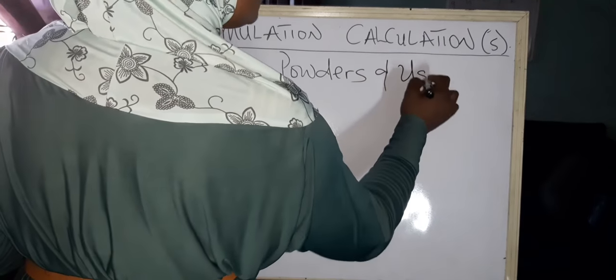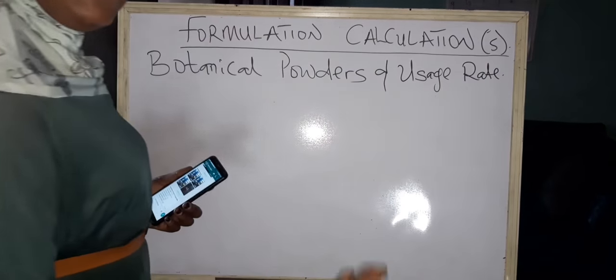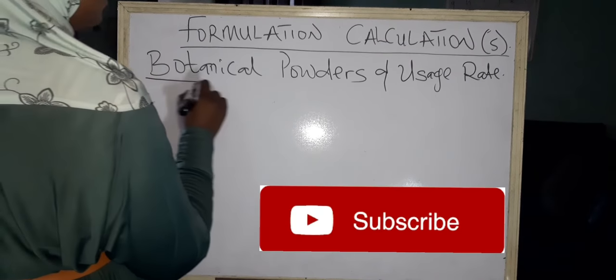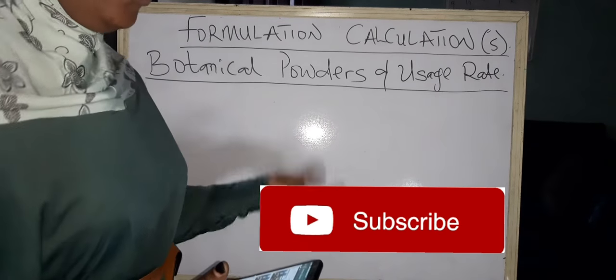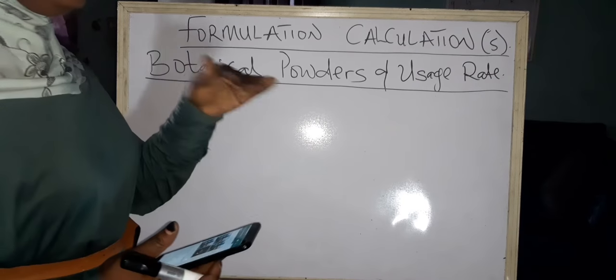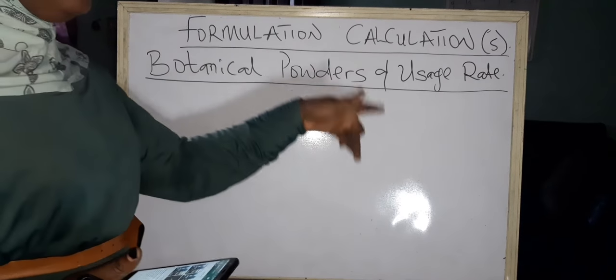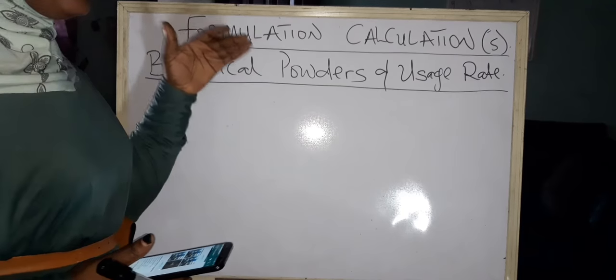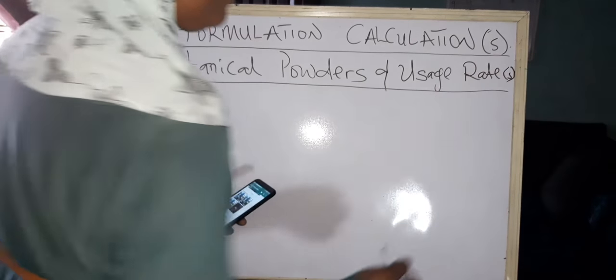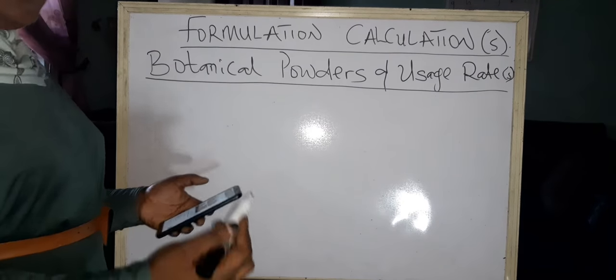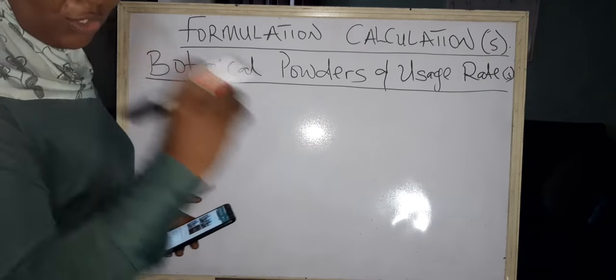When you tell them a usage rate of, for example, kojic acid, they ask what does that really mean. What it really means is the amount, just like medication dosage: two in the morning, two in the afternoon, two at night. Following the dosage makes the medication effective. The same thing with botanical powders - following their usage rates makes the product effective. When you under-use, the product won't work. When you overuse, it will work but give you a negative result.